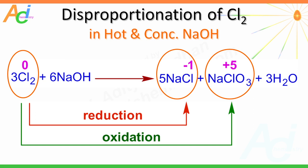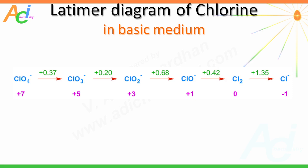You can find out why chlorine undergoes disproportionation in basic medium by using the Latimer diagram. Chlorine can undergo disproportionation to chloride and hypochlorite ions, since the electrode potential on the right side is greater than that of the electrode potential written for the left-hand side reaction. Hence, this disproportionation reaction is thermodynamically feasible.